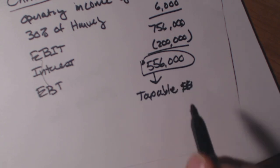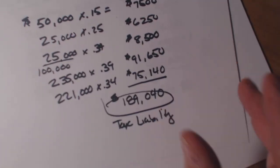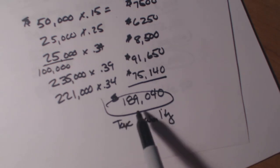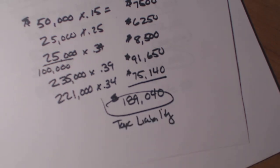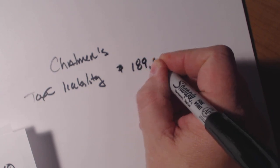We had $556,000 of taxable income and then after we ran that number through the taxable charts for corporations we found out that we had a tax liability of $189,000, $189,040.